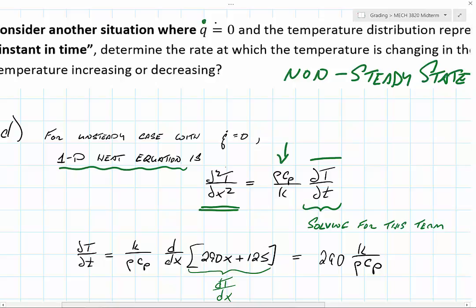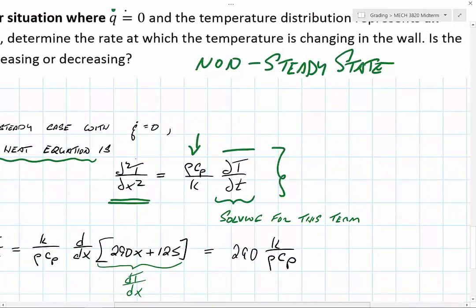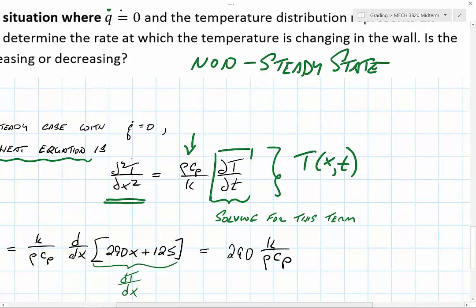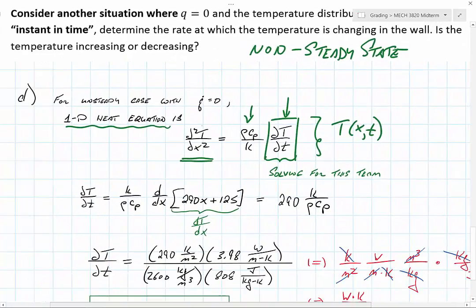What we're looking at here is that we have temperature as a function of x and t—that's why these partial derivatives are showing up. Since we're just asked what's the rate at which temperature is changing, we just need to evaluate this term. We were given the temperature distribution at that instant in time as being T as a function of x, and we've already taken the derivative of it.